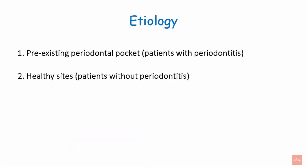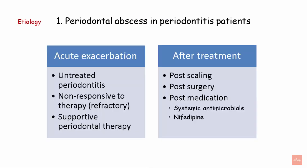The etiology of periodontal abscess may involve a pre-existing periodontal pocket in patients with periodontitis, or healthy sites in patients without periodontitis. In patients with periodontitis, acute exacerbation can lead to development of a periodontal abscess. Patients non-responsive to periodontal therapy and patients after completion of periodontal surgery can also develop periodontal abscess.